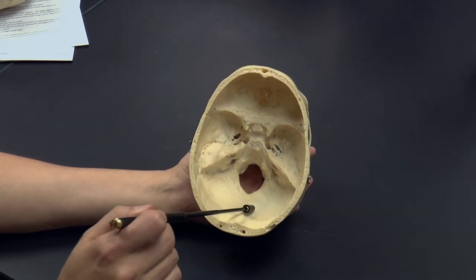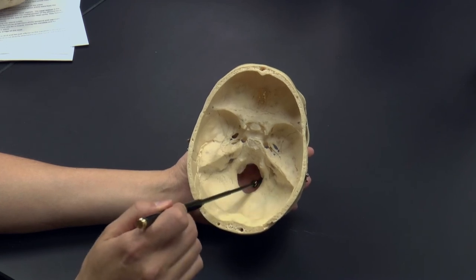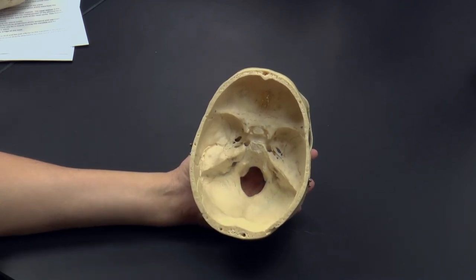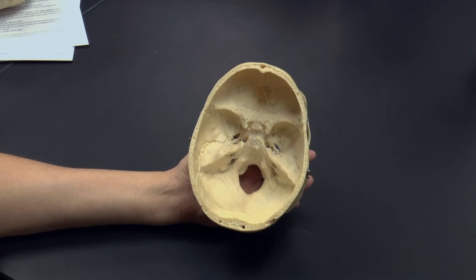You can see here the occipital bone. And again, you can see the foramen magnum from the inside as well, as we saw from the outside.